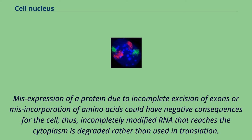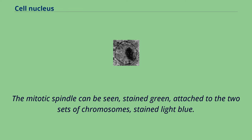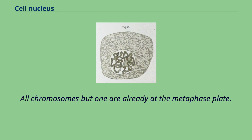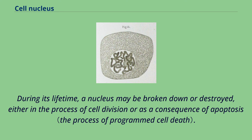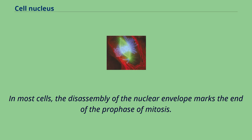An image of a newt lung cell stained with fluorescent dyes during metaphase. The mitotic spindle can be seen stained green, attached to the two sets of chromosomes stained light blue. During its lifetime, a nucleus may be broken down or destroyed, either in the process of cell division or as a consequence of apoptosis. During these events, the structural components of the nucleus — the envelope and lamina — can be systematically degraded. In most cells, the disassembly of the nuclear envelope marks the end of the prophase of mitosis. However, this disassembly of the nucleus is not a universal feature of mitosis and does not occur in all cells.